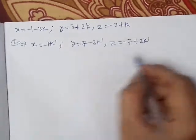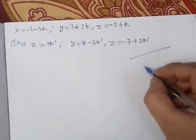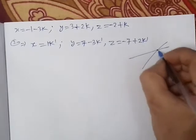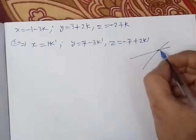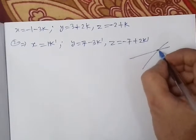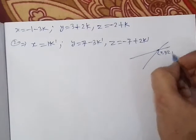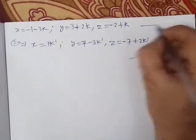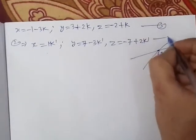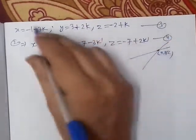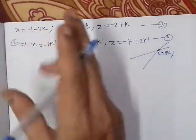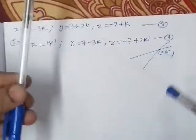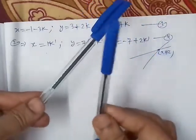We know that when two lines intersect, the point lies on both lines. So the x, y, z coordinates must be equal. We can equate the expressions from equations 3 and 4 to check if a common point exists.